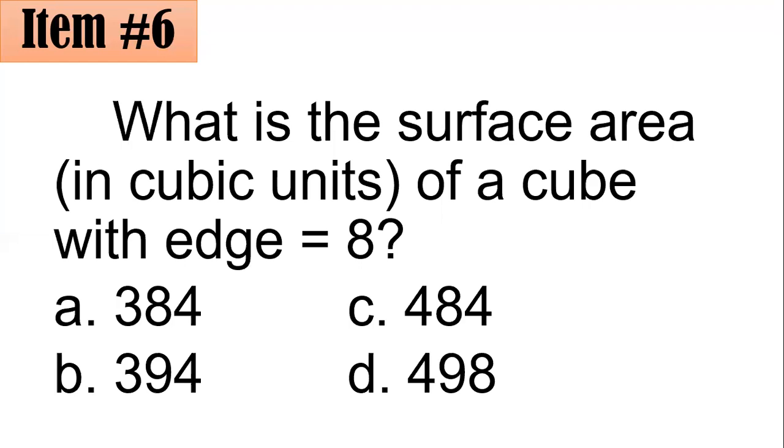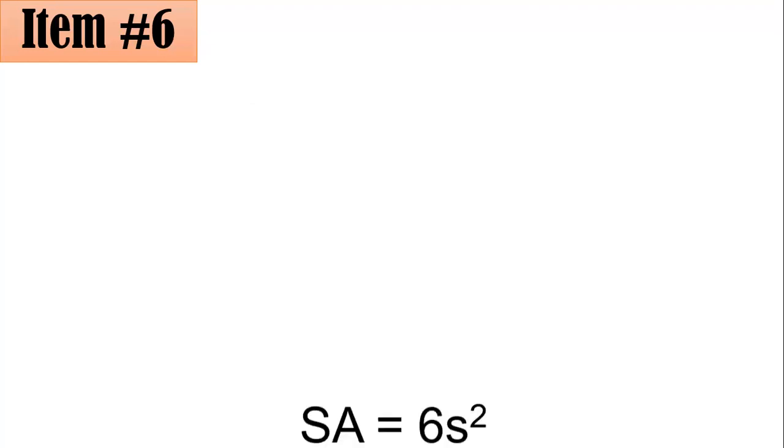When we speak about an edge, for this case, if we take each face as a square, then it's like the side of your square. And we have to recall that the formula for the surface area of a cube is 6s squared. How come? Because one area, the area of a square is s squared. But since there are 6 faces, that's why times 6.